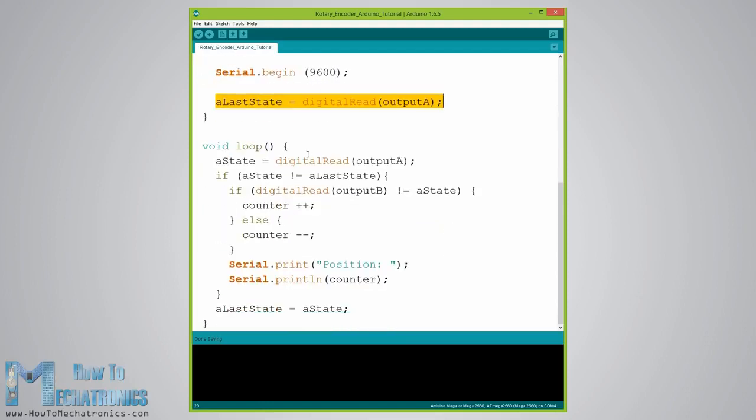Then, in the loop section, we read the output A again, but now we put the value into the A state variable. So, if we rotate the encoder and a pulse is generated, these two values will differ and the first if statement will become true. Right after that, using the second if statement, we determine the rotation direction.